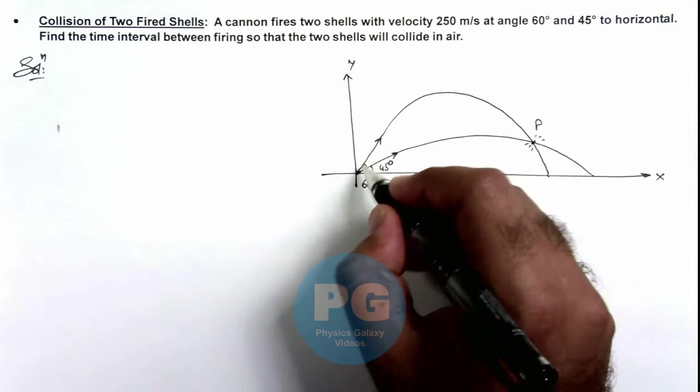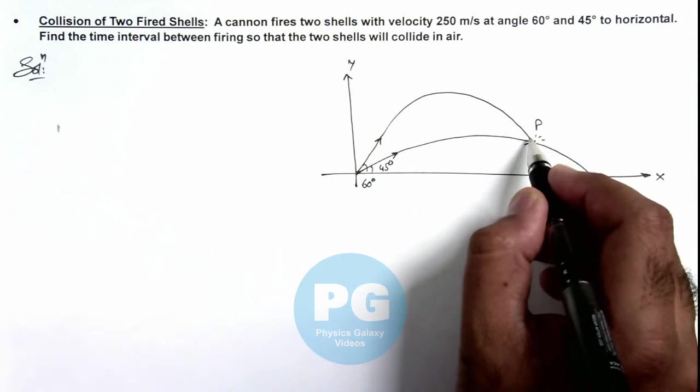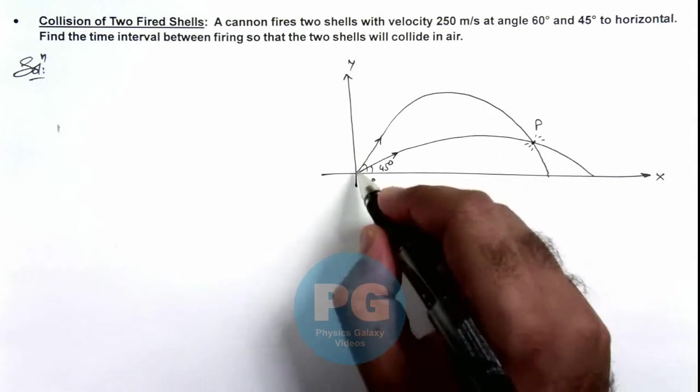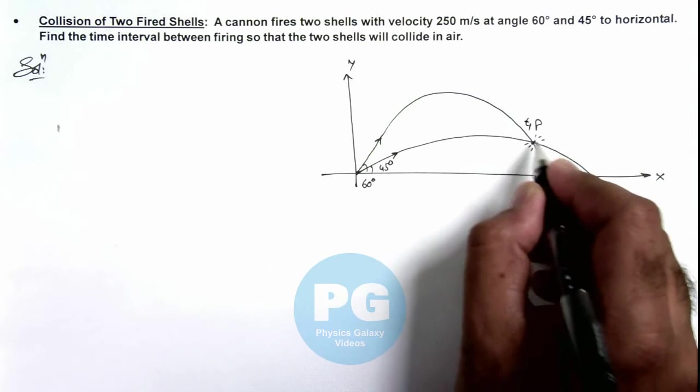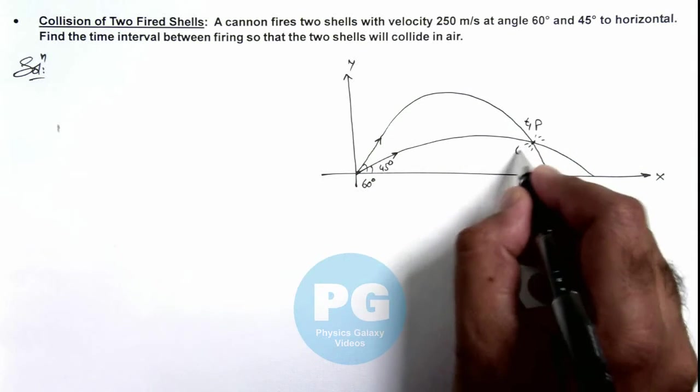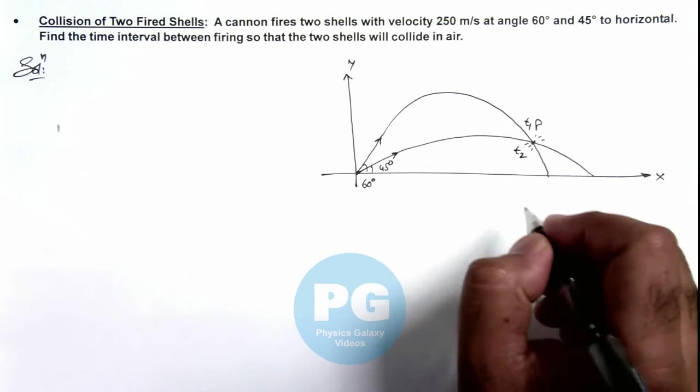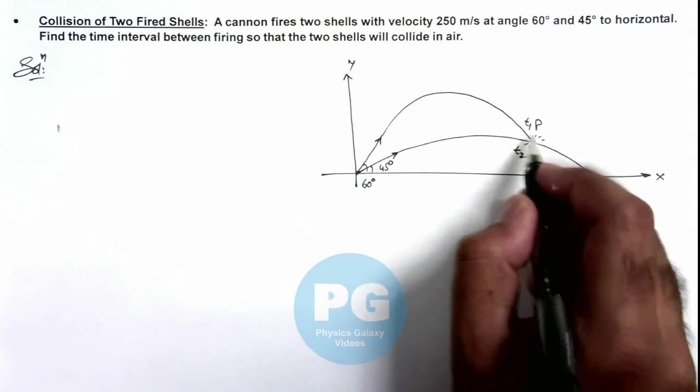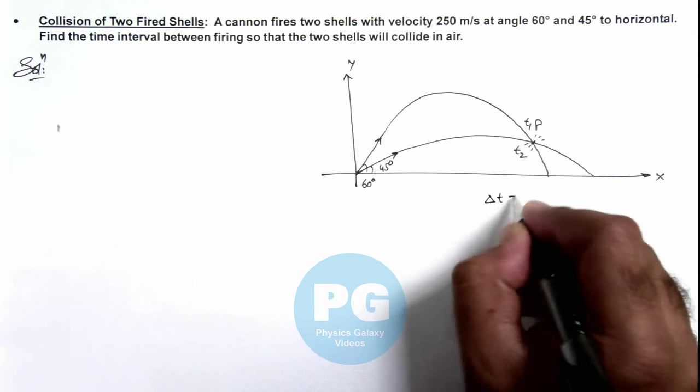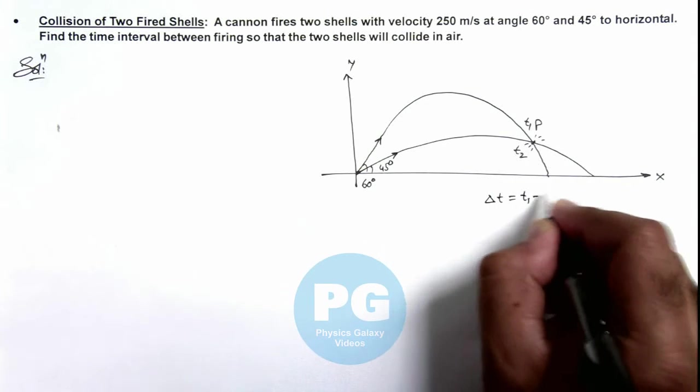If this shell which is fired at angle 60 degrees, taking the longer path, takes time t₁ in reaching P, and the other one takes time t₂ in reaching P, then the time difference between firing of the shells so that they'll collide is Δt, and this must be t₁ minus t₂.